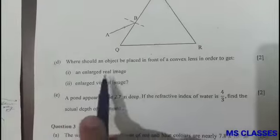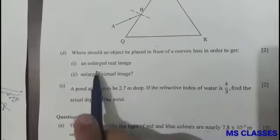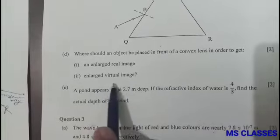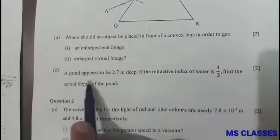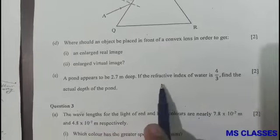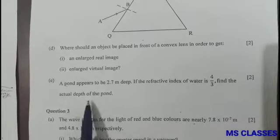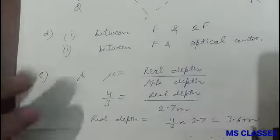Part (d): Where should an object be placed in front of a convex lens to get an enlarged real image? Between F and 2F. Enlarged virtual image? Between F and optical center. Part (e): A pond appears to be 2.7 meters deep. If the refractive index of water is 4/3, find the actual depth. As mu is real depth upon apparent depth, from this formula we get real depth as 3.6 meters.